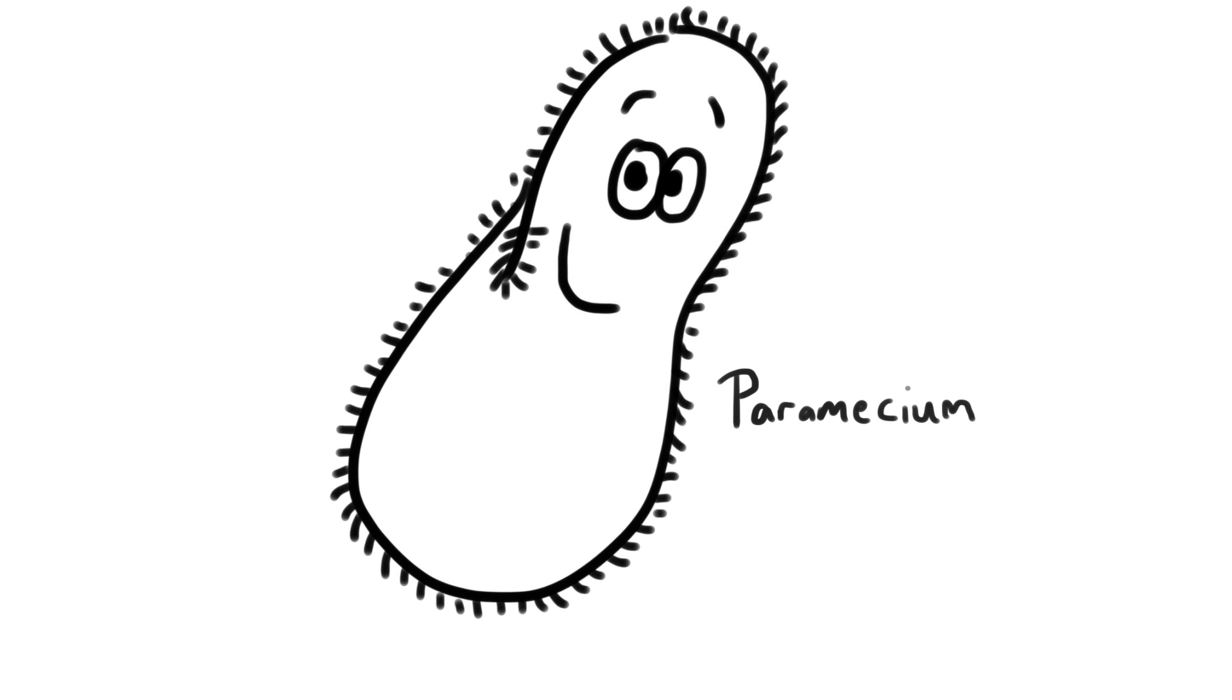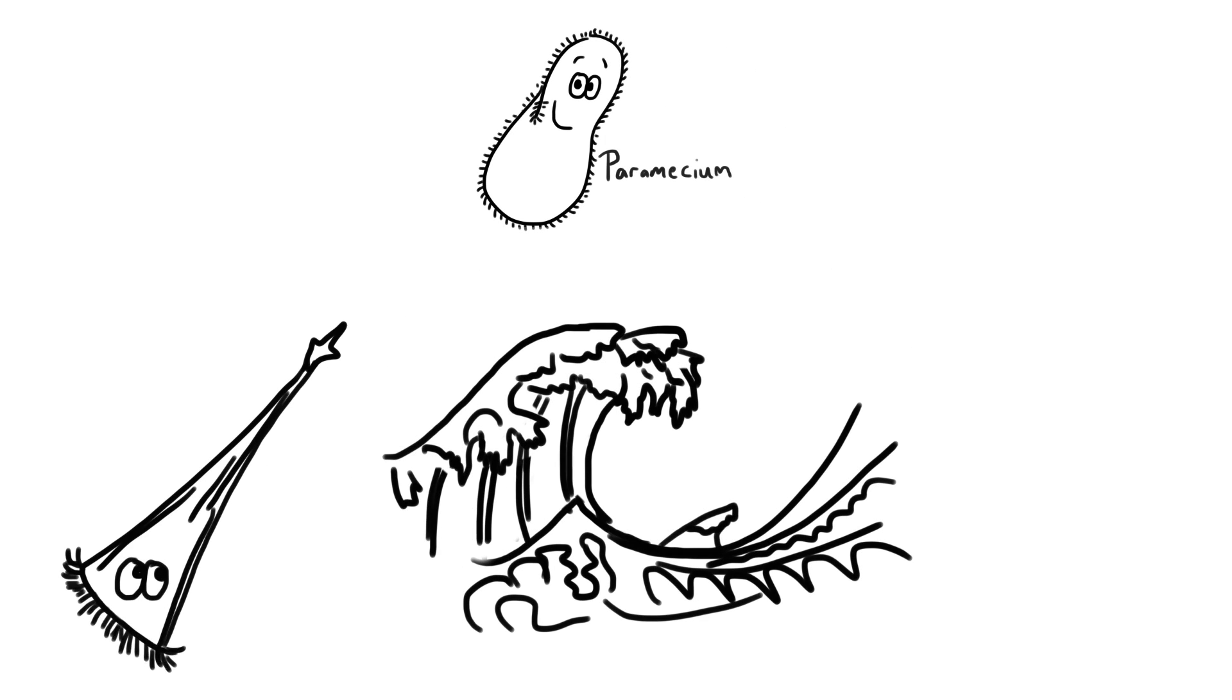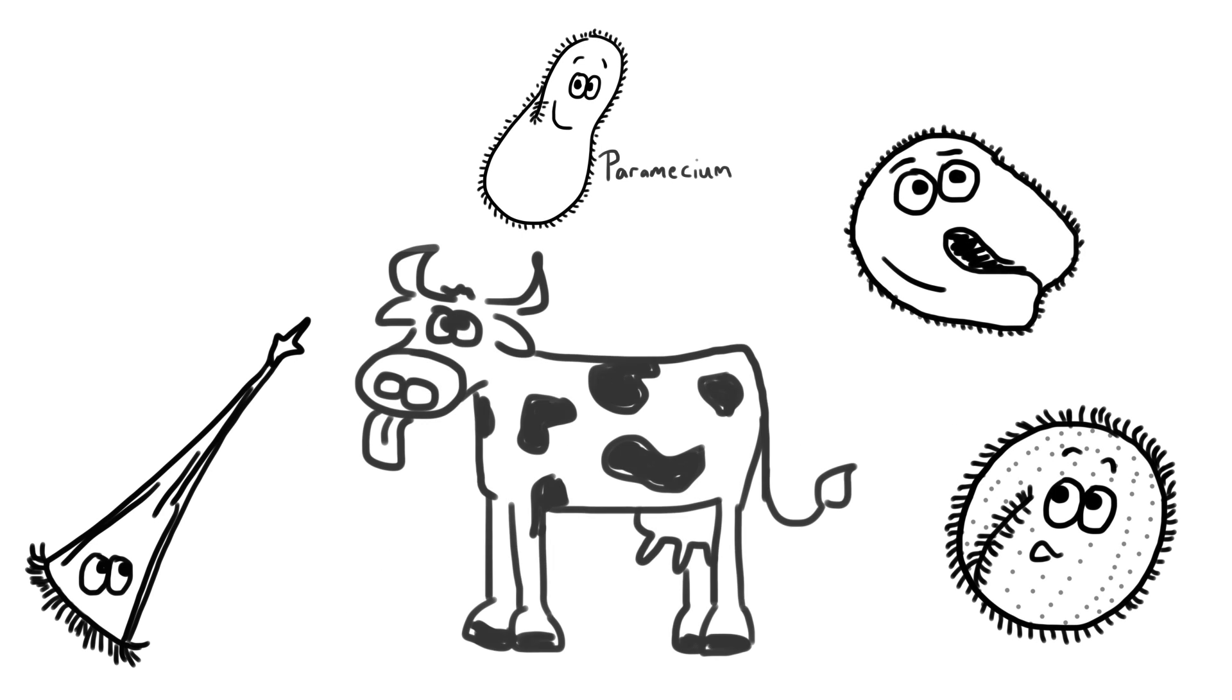Paramecium is a species of ciliate, a single-celled protozoa that live all over the world wherever there's water: oceans, lakes, ponds, even inside other organisms.